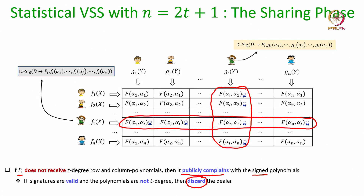It is easy to see that if the dealer is honest it will not be discarded with very high probability, because an honest P_i will never complain against an honest dealer. A potentially corrupt P_i might try to unnecessarily complain and reveal incorrect points; there is a non-zero error probability it could forge the dealer's IC signatures on points the dealer never gave it, causing parties to discard an honest dealer. However, the probability that a corrupt P_i can forge an honest dealer's signature is very negligible, so if a dealer is discarded it is guaranteed with very high probability to be corrupt.